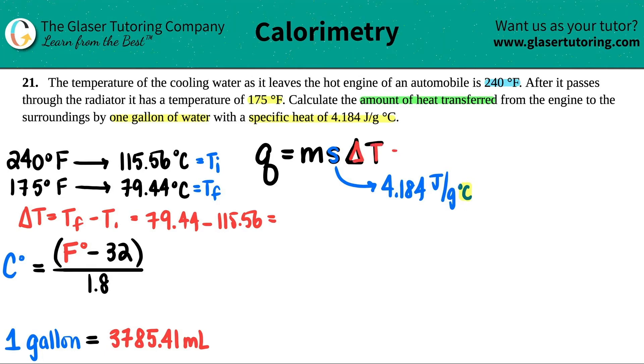So 79.44 minus 115.56, I get a delta T which is negative. That always means that we're dropping in temp. And we're dropping by 36.12 degrees Celsius.